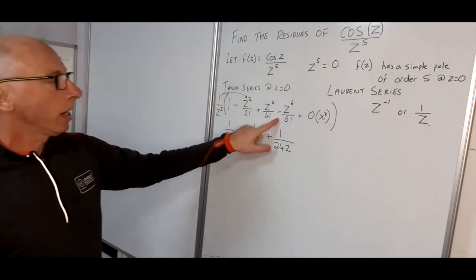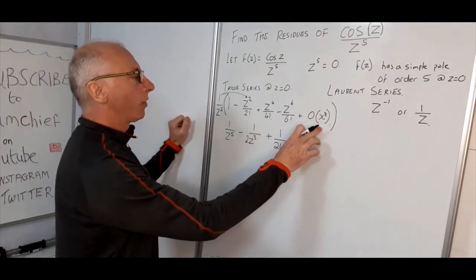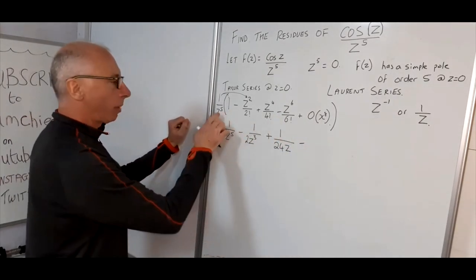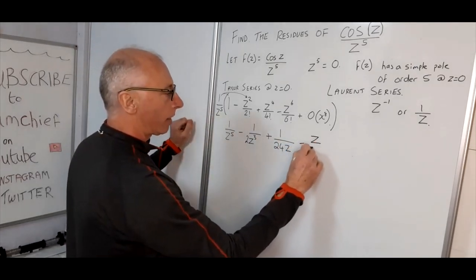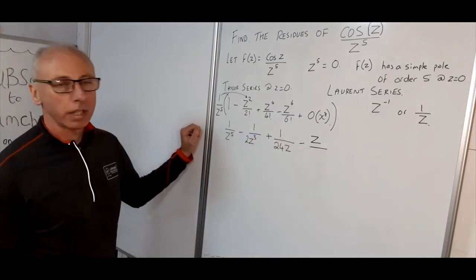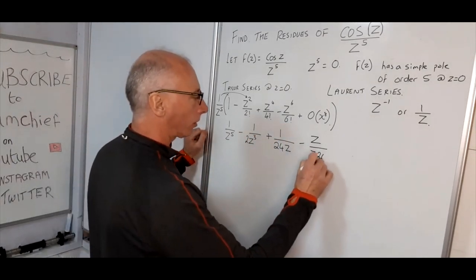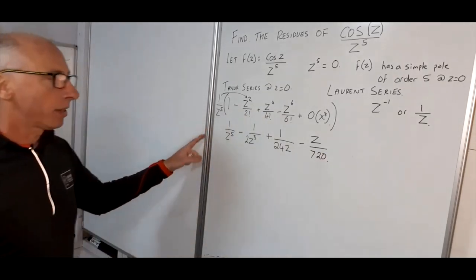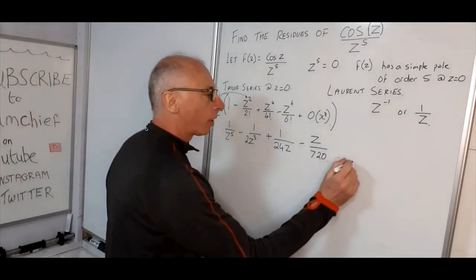For the next term, minus z to the 6 divided by z to the 5 gives minus z over 720, since 6 factorial is 720. So that's our Laurent series, and we could go on further.